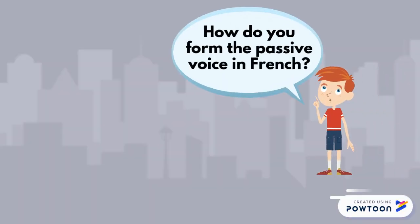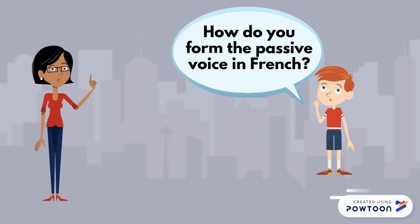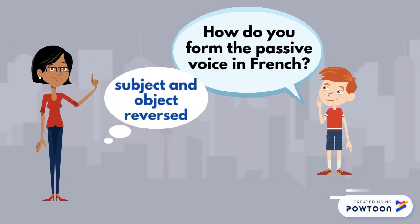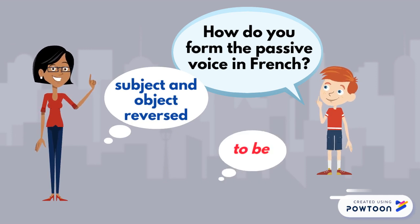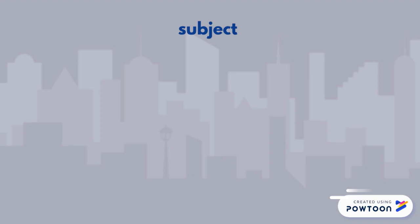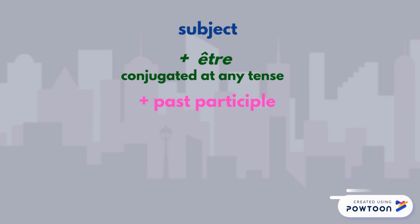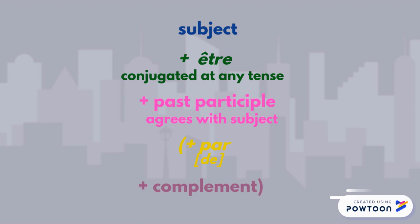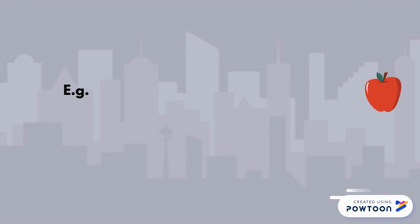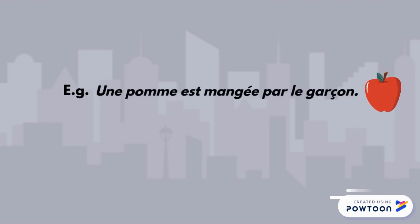How do you form the passive voice in French? Quite like in English, not only have the subject and the object been reversed, but the verb 'to be' has been introduced. In French, you take your subject and add the verb être conjugated at any tense, and the past participle of the verb, which agrees with the subject in gender and number. You can also add the preposition PAR or sometimes DE and a complement. For instance, if we use the sentence of the English example: une pomme est mangée par le garçon.